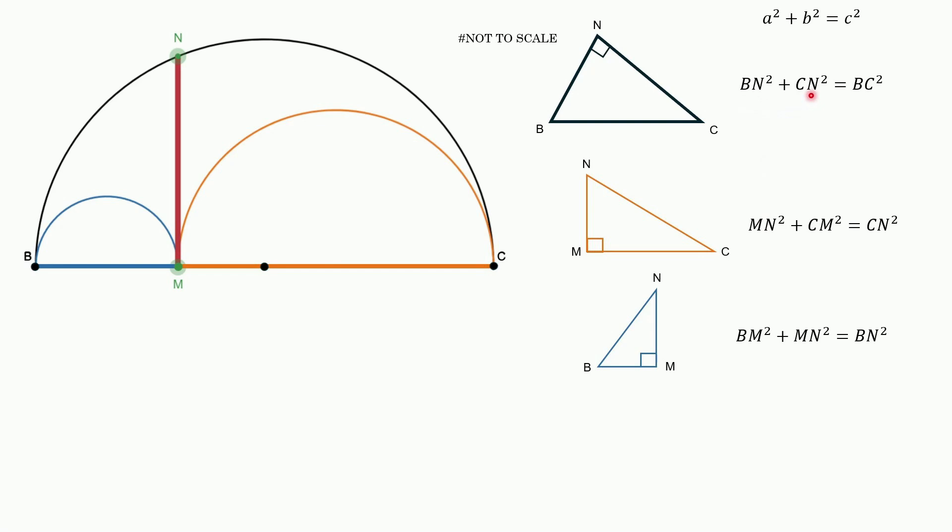So the bn squared plus cn squared is equal to bc squared. That's the hypotenuse. cn is the hypotenuse of the orange triangle. And the blue triangle has a hypotenuse of bn and sides of bm and mn. All right? No problem there, of course, right? Now, one thing to keep in mind is bc. bc, well, that is exactly the same as bm plus cm, right?